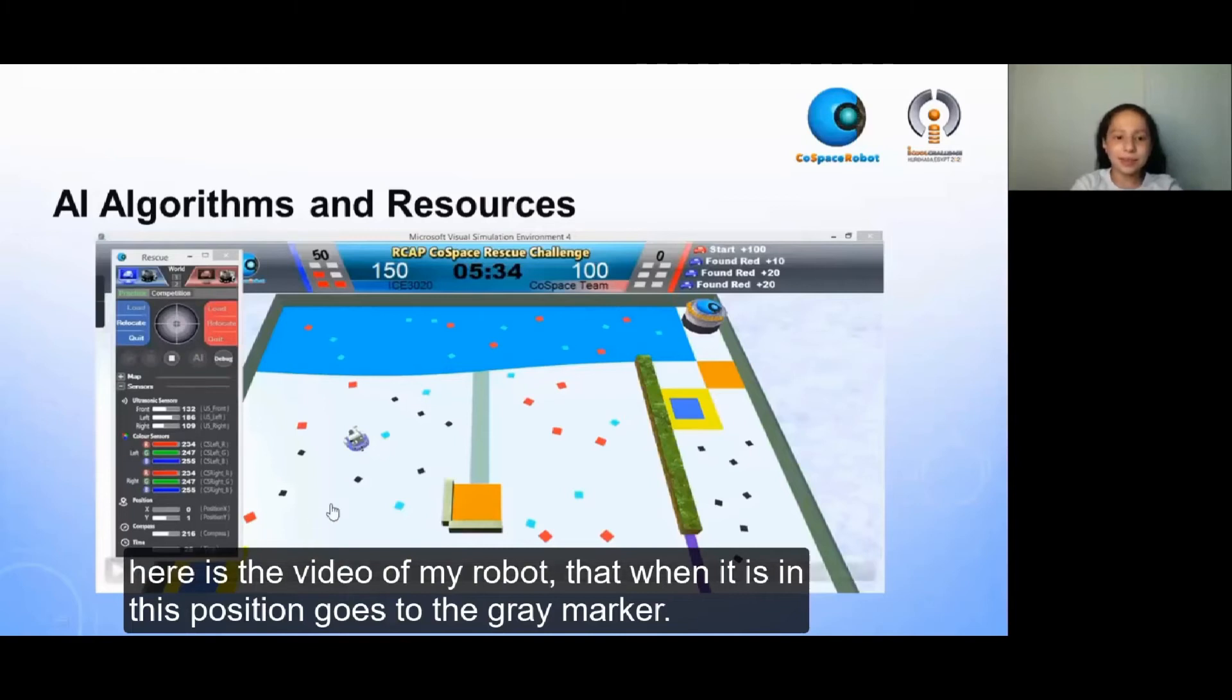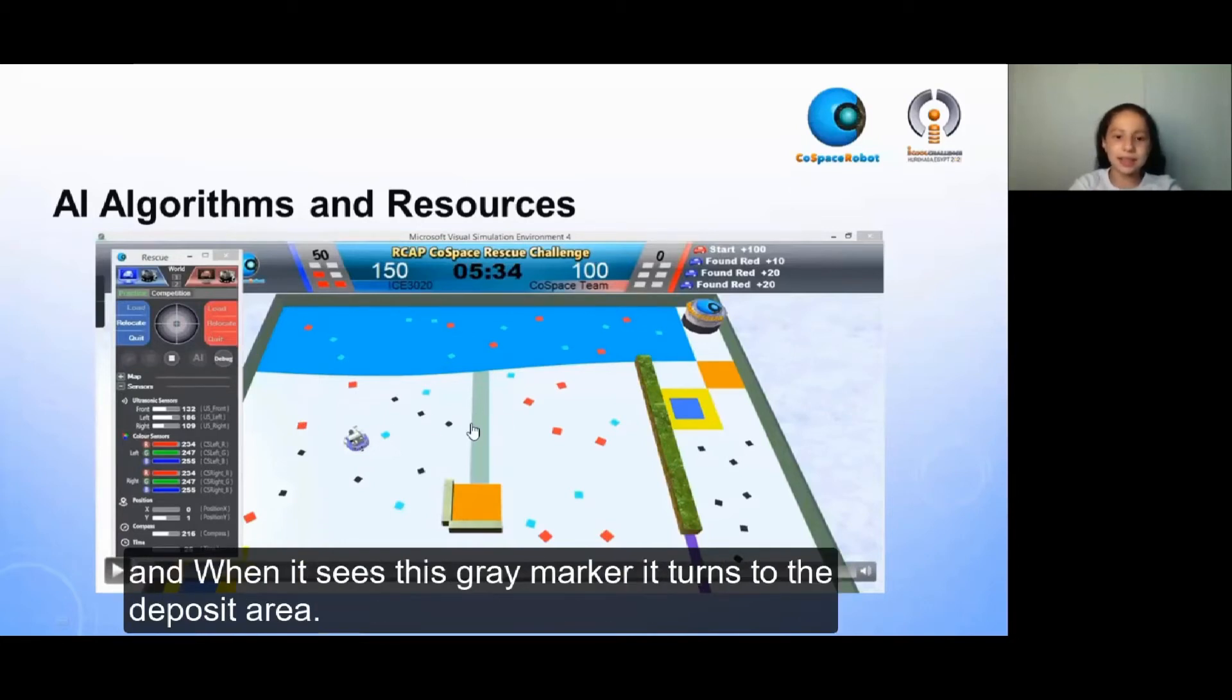Here is the video of my robot, that when it is in this position, it goes to the grey marker, and when it sees this grey marker, it turns to the deposit area.